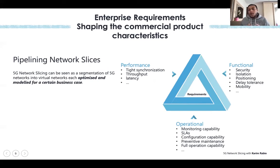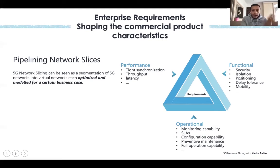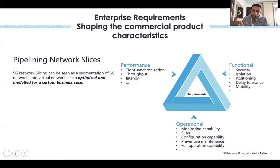The characteristics all come from enterprise requirements. If you are talking to different verticals — mining, agriculture, health, V2X vehicles, BMW, Audi — every vertical or business entity has its own requirements. We can group these into three categories.